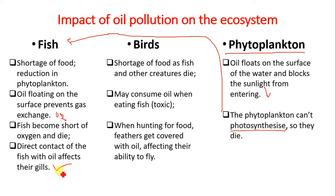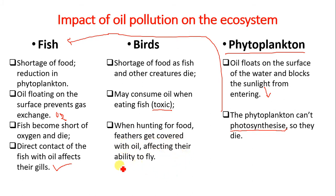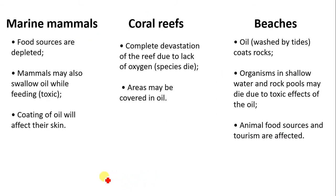For birds, there is a shortage of food as fish and other creatures die. Birds may also consume oil when eating fish, which is toxic. When hunting for food, feathers get covered with oil, affecting their ability to fly. This is a major impact on birds.